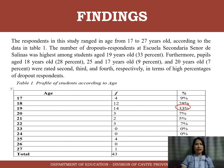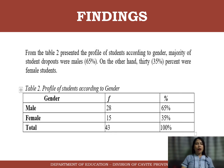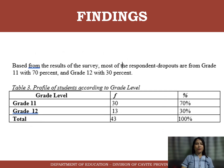The number of dropouts in Escuela Secundaria Señor de Salinas was highest among students aged 19 years old, or 33%. From the table on the profile of students according to gender, the majority of student dropouts were male, or 65%; on the other hand, 35% were female students.